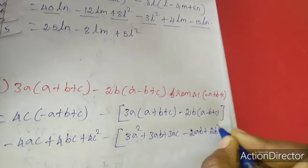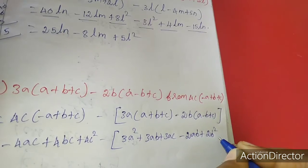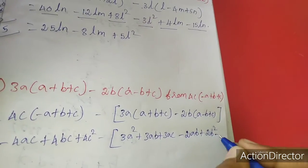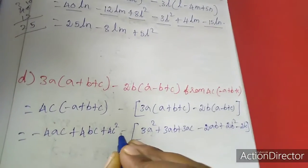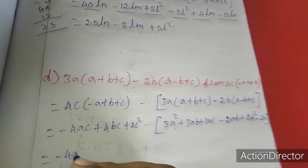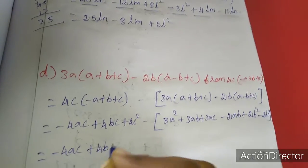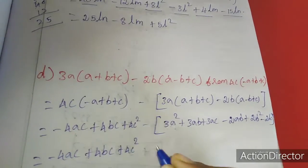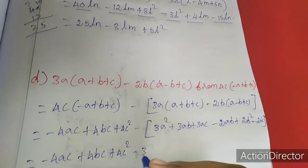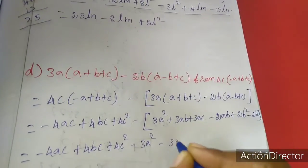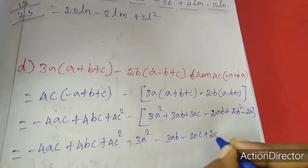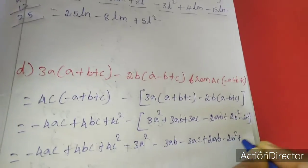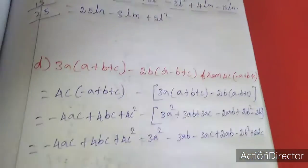Now with minus sign: -4AC + 4BC + 4C² - 3A² - 3AB - 3AC + 2AB - 2B² + 2BC.